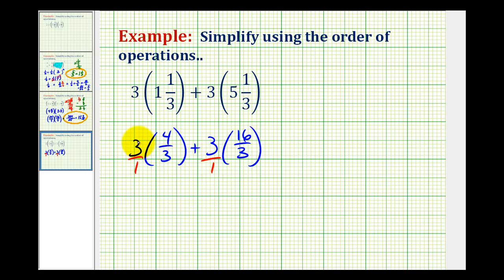And now we go to multiply. Notice that we have a 3 here in the numerator and a 3 here in the denominator, so that's going to simplify to 1. So for this first product we have 4/1, or just 4, plus—and the same thing happens here. We have a 3 in the numerator and a 3 in the denominator, so this simplifies to 1 as well.